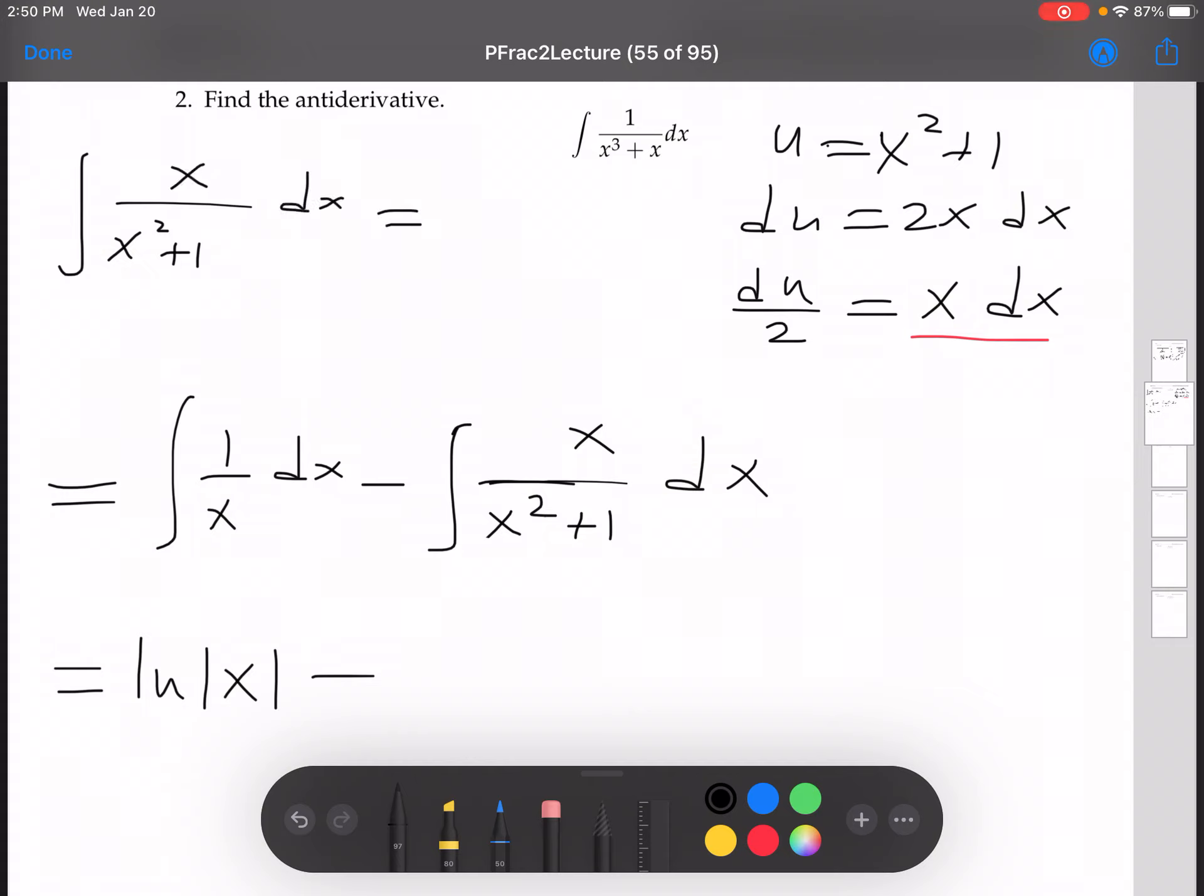This is equal to the antiderivative of 1 over u du over 2. So pull that 1 half out front. It's equal to 1 half ln absolute value of u, which is equal to 1 half ln absolute value x squared plus 1.